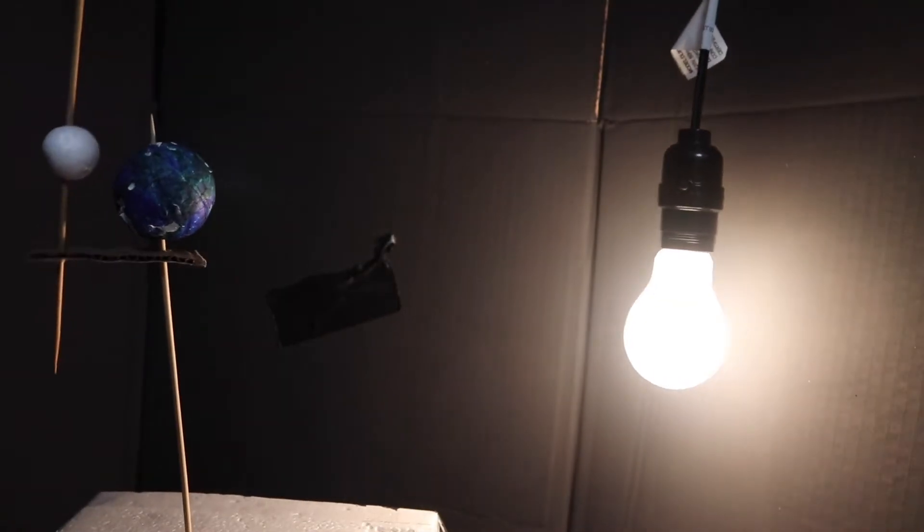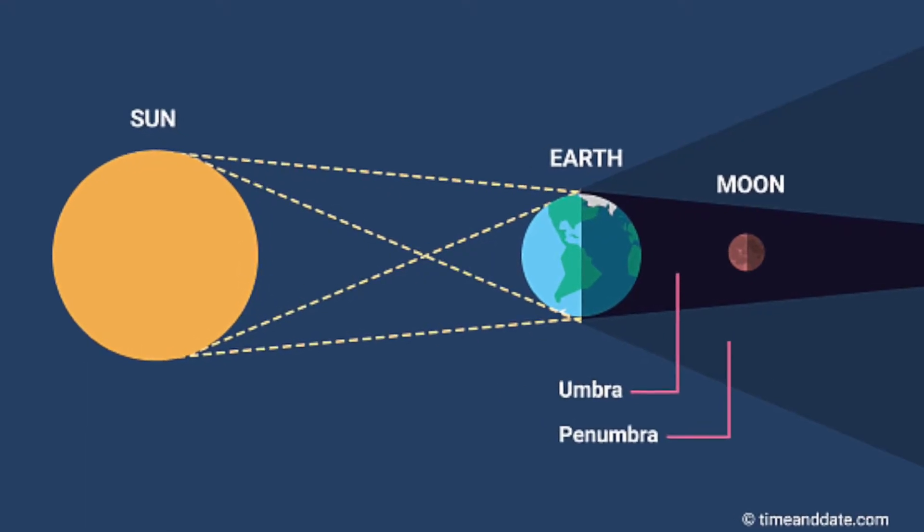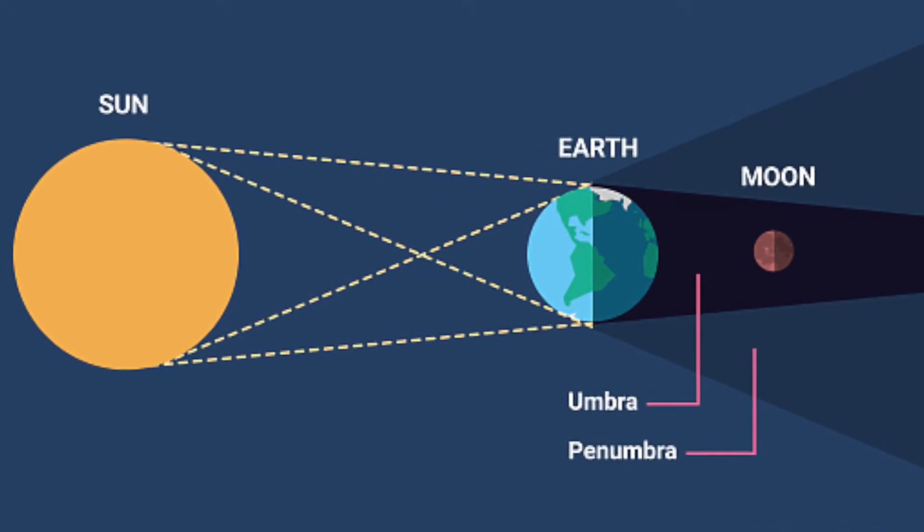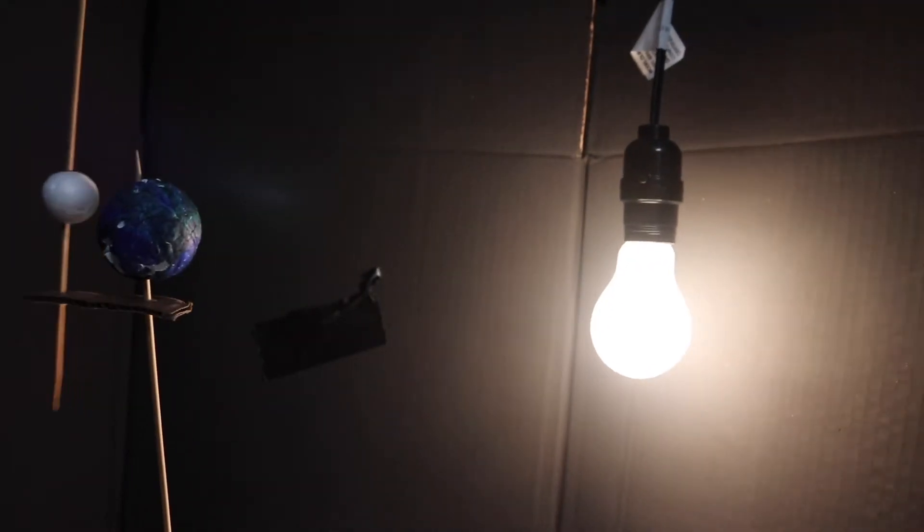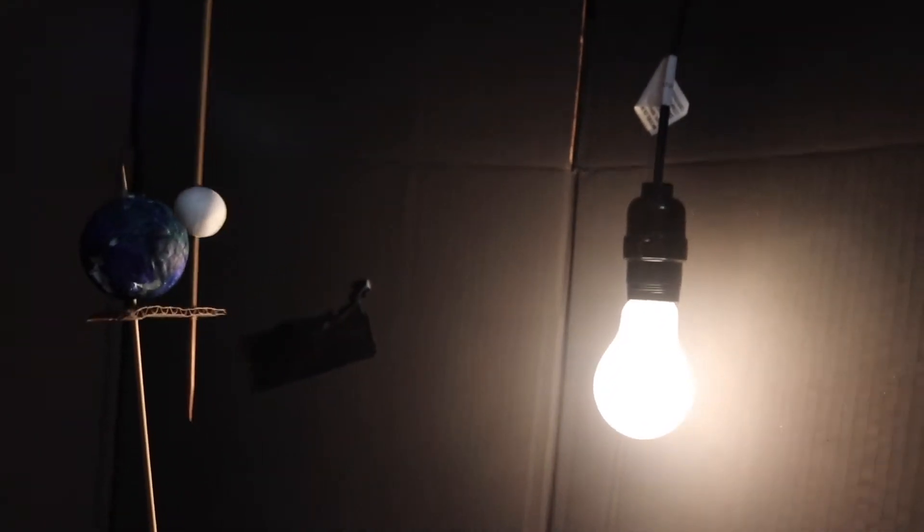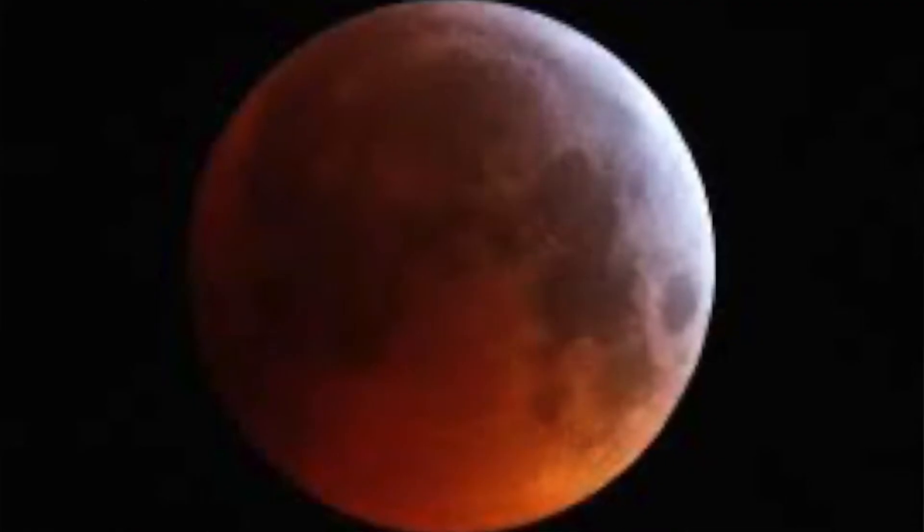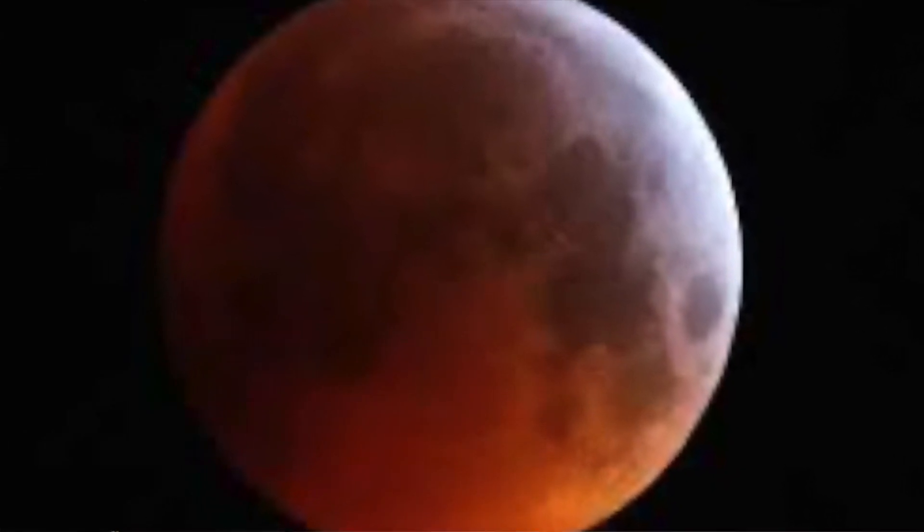A lunar eclipse occurs when the moon goes directly behind the Earth at the Earth-Sun plane, going into darkness because of the Earth's shadow. But as the Earth does not block all the light, the moon will change into an interesting reddish color.